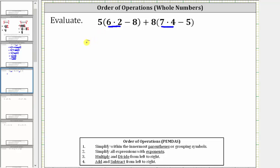Which means the expression simplifies to five times the quantity 12 minus eight, plus eight times the quantity 28 minus five. And now still simplifying within the parentheses, we now determine the two differences. 12 minus eight is equal to four, and 28 minus five is equal to 23.